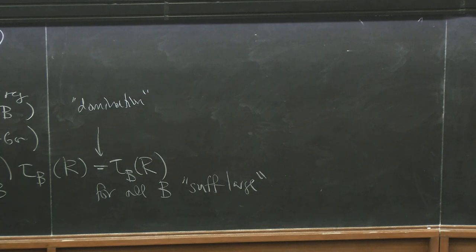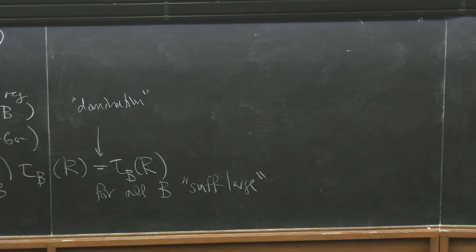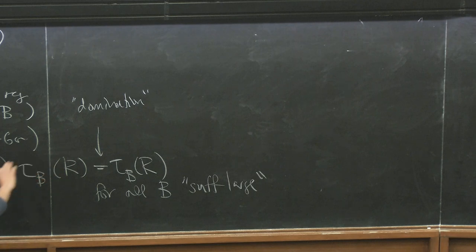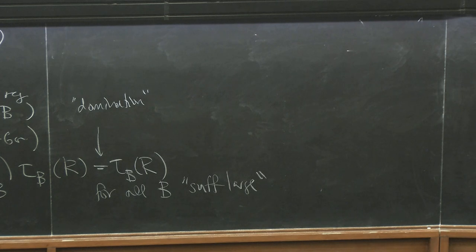Take any set of BCM algebras; I can always find another one so that all maps from the original set factor through that one. When I do this, the traces can only get smaller, so it's easy to see that will give you some B for which you have equality. Once you do, any larger B obviously also gives equality. This is the domination trick of Ma-Schwede.